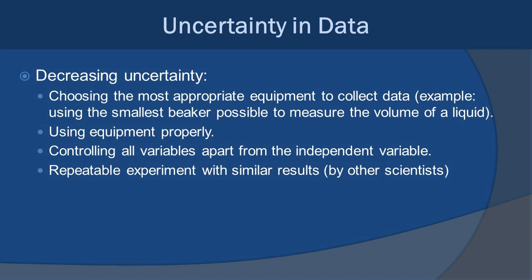As scientists, we try and decrease uncertainty. We do this in a number of ways. First of all, we try and choose the most appropriate equipment to collect the data that we are trying to access. For example, if you want to measure volume, you want to use the smallest beaker needed for the volume you're actually measuring. If you're measuring the length of your fingernail, you might want to use millimeters instead of meters because meters are kind of big. You also want to make sure that you're using the equipment correctly and properly. For example, if it needs to be calibrated, you calibrate before you start collecting data. You want to obviously control all the variables that have nothing to do with the direct experiment. And of course, finally, you want to make sure this is a repeatable experiment that will allow other scientists to verify your research.